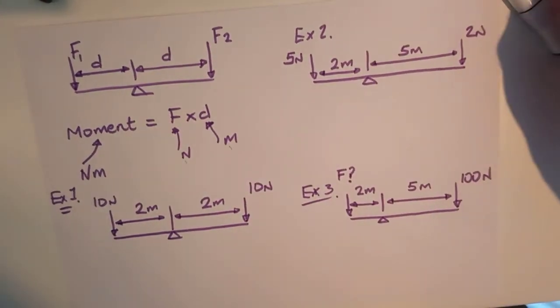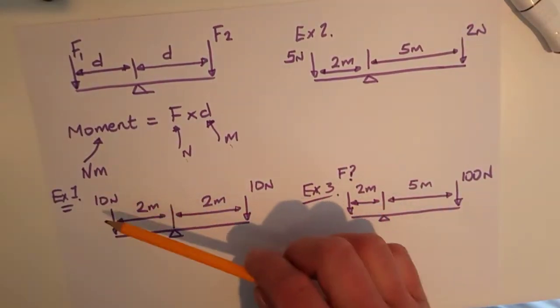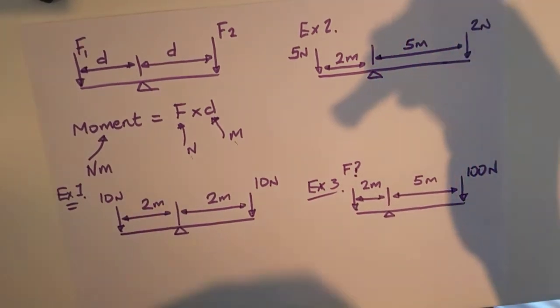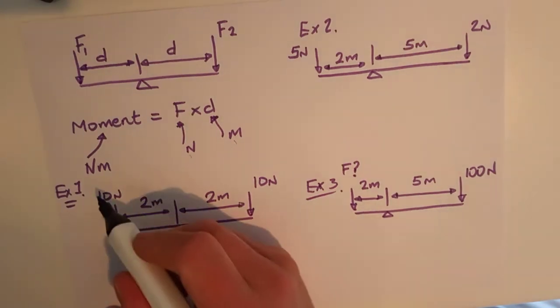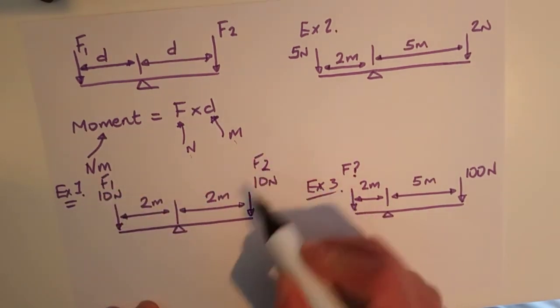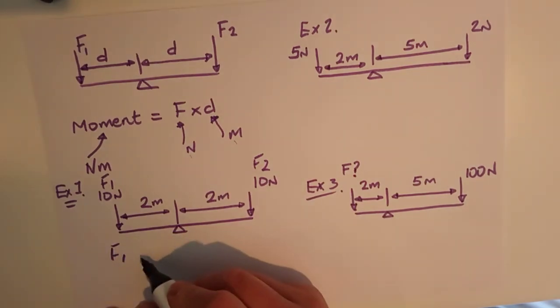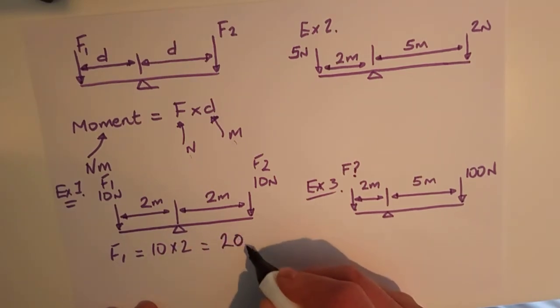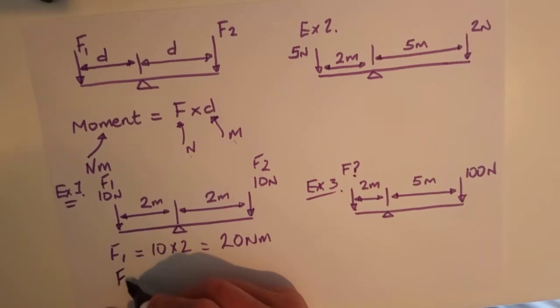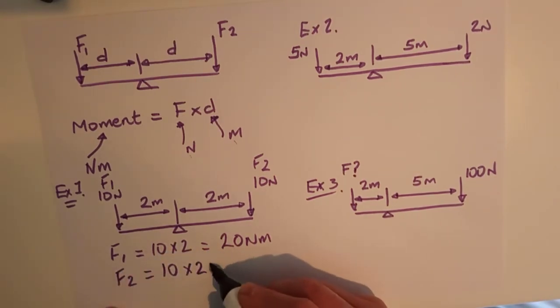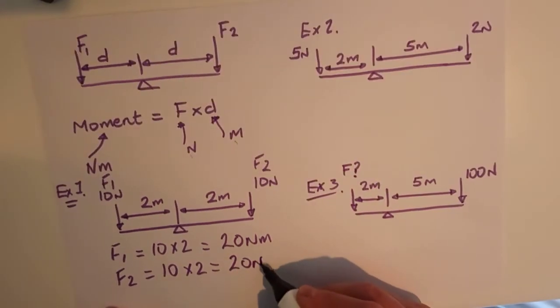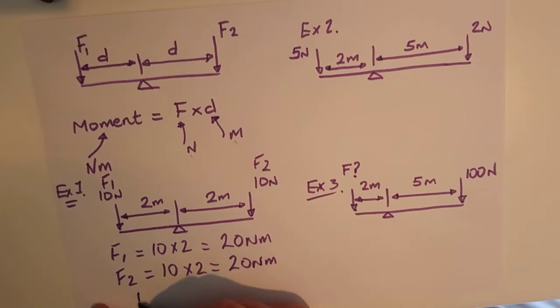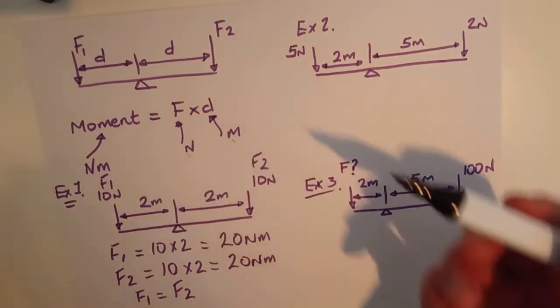So for our first example here, we can see whether these are balanced or unbalanced. And the easy way of doing this is taking your force times distance. So we say this is force one, and this is force two. All we're looking to see is if force one and force two are balanced, balancing each other out. And you can always pretty much see that this is going to be the case. So force one is a moment force times distance 10 times 2 is equal to 20 newton meters. And force two is again, 10 times 2. I've kept it really simple to begin with is 20 newton meters. So we can say that they're balanced. So F1 is equal to F2. Force one is equal to force two.